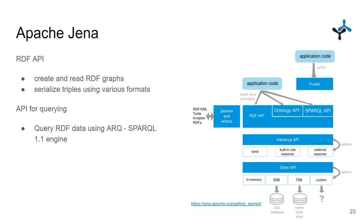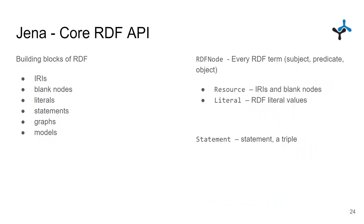On top of the RDF API there is an Ontology API corresponding to the inference API in RDF4J — implementing inference capabilities. On top of that there is a SPARQL API for querying using SPARQL. Completely aside is the HTTP server called Fuseki, which inside has this stack and allows it to receive queries over HTTP. In Apache Jena every RDF term is an instance of RDFNode — in Eclipse RDF4J this was Value. There are two kinds: Resources and Literals. Resources can be IRIs and blank nodes.